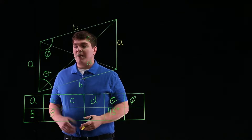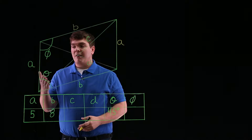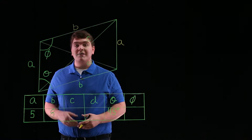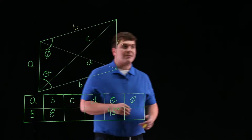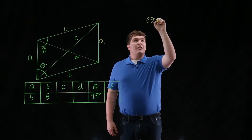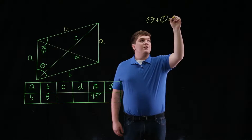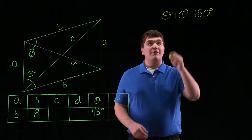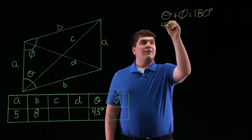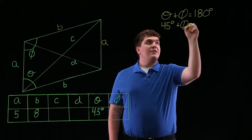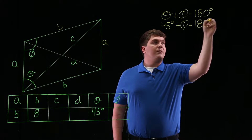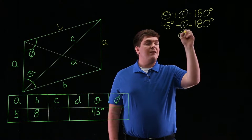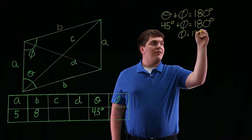Let's also note that since the bottom and the top lines are parallel, theta and phi are co-interior angles, and from geometry we know that co-interior angles are supplementary. This means that theta plus phi is equal to 180 degrees. And since we know that theta is 45 degrees, we have 45 degrees plus phi equals 180 degrees. We can solve for phi by subtracting 45 from both sides, giving us phi is equal to 135 degrees.